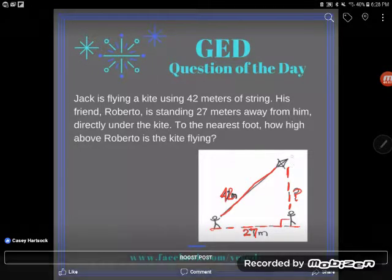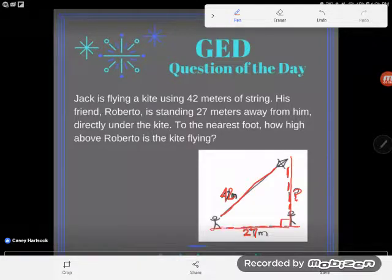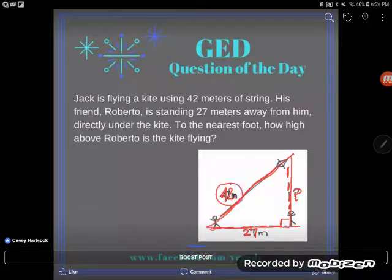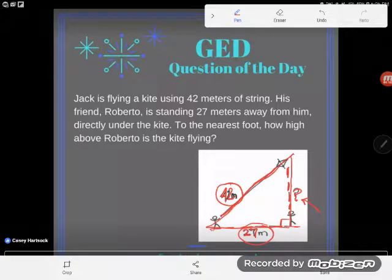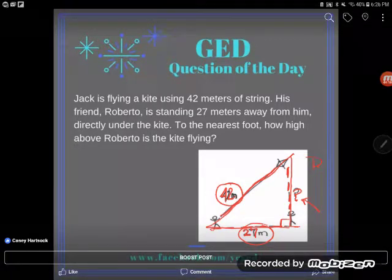This is a pretty simple problem if you recognize the fact that these two gentlemen and the kite make a right triangle. We can see that the three points here make this right triangle. We've been given two of the sides of a right triangle and we're looking for the third. So we've got a formula for that. There is a formula that relates the three sides of a right triangle.